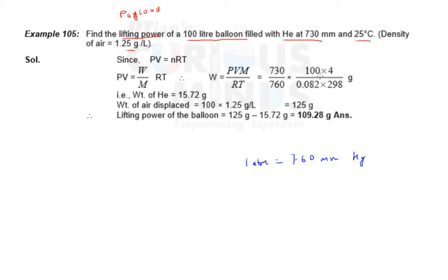Pressure in atm, volume in liters which is 100. If you take pressure in atm, volume in liters, then R should be 0.082. So PV by RT, molecular weight 4 for helium, and 298 temperature in kelvin - 25 degree plus 273. So on solving you get the weight of helium is 15.72 grams.